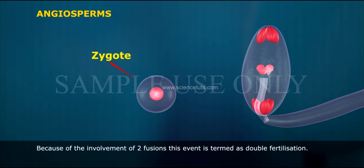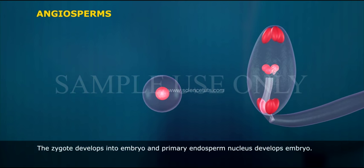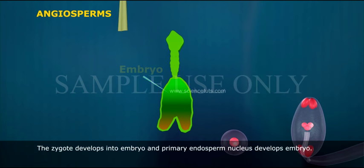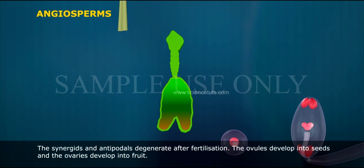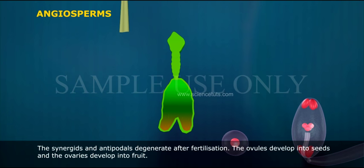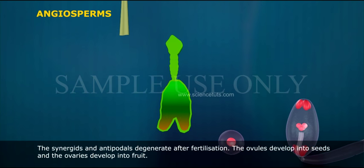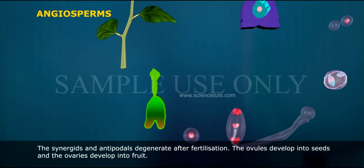Because of the involvement of two fusions, this event is termed as double fertilization. The zygote develops into the embryo and the primary endosperm nucleus develops into the endosperm. The synergids and antipodals degenerate after fertilization.